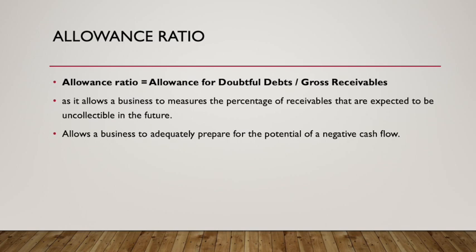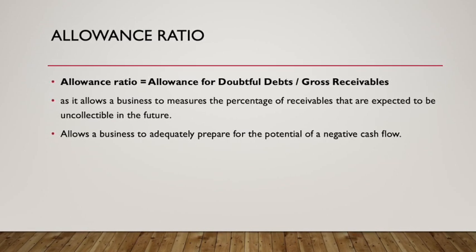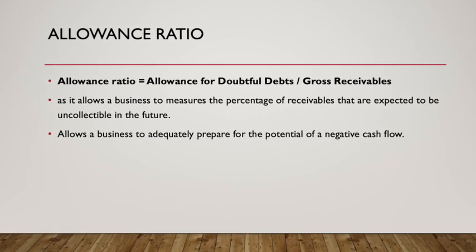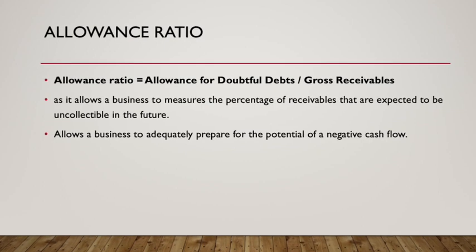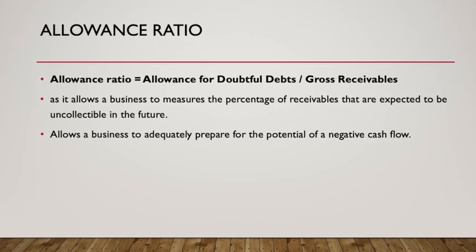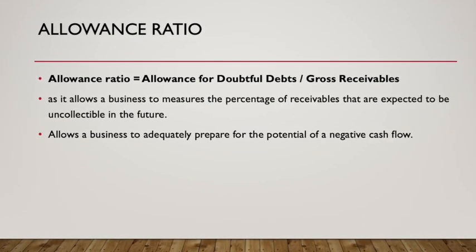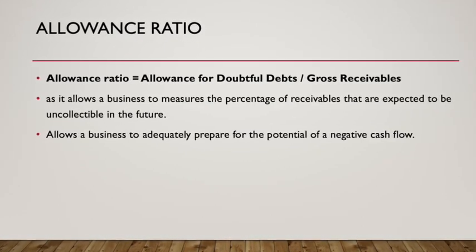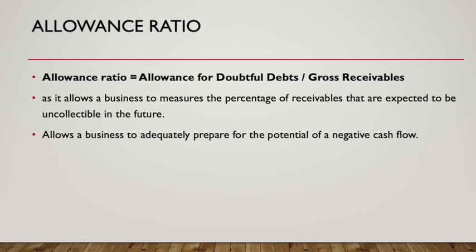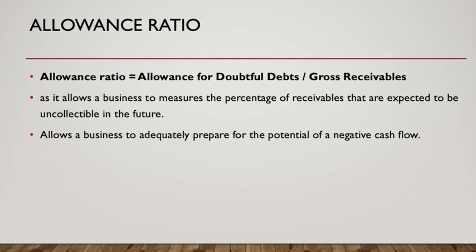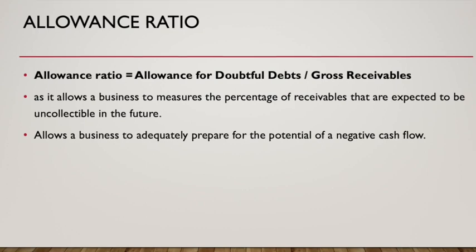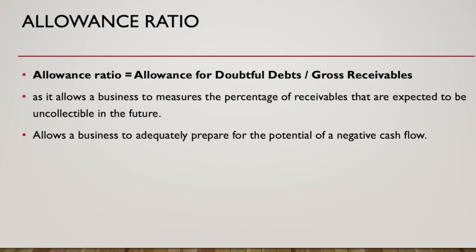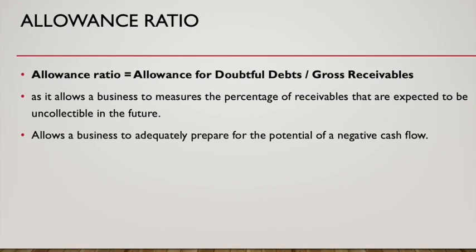The allowance ratio formula is calculated by dividing the allowance for doubtful debts by their gross receivables. This is an important formula as it allows a business to measure the percentage of receivables that are expected to be uncollectible in the future. This allows a business to adequately prepare for the potential of a negative cash flow.